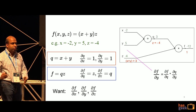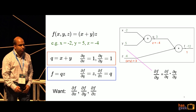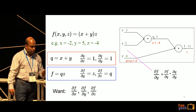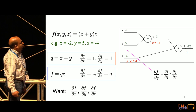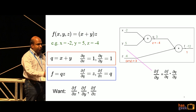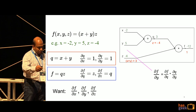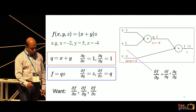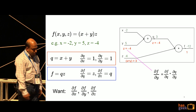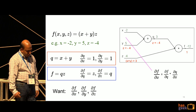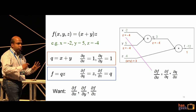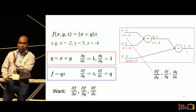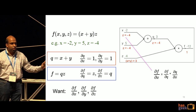Here we have the error signal which started from one end of the network back-propagating to the origin. We start to use the chain rule. Since f is a composition of q and y, the derivative of f with respect to y will also have those compositions — which again in this case is z = -4. This is what is called back propagation: the error starts from one end of the network and propagates back to the origin.